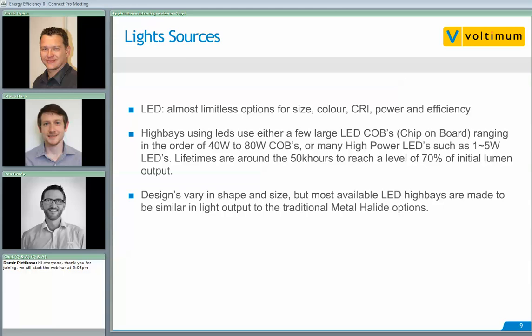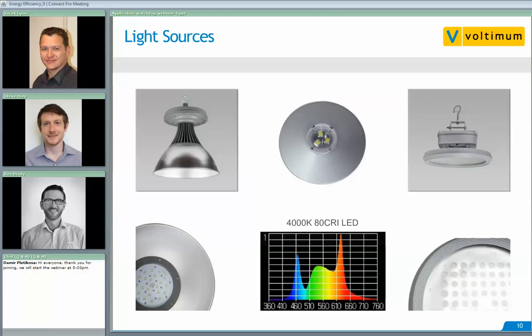LEDs don't tend to fail as other lamp sources do — they tend to just degrade in lumen output, so catastrophic failure is relatively unlikely. Most available LED high bays are made to be similar in light output to traditional metal halide options. Some designs mimic the look of traditional metal halide high bays, while others concentrate on the requirements of the luminaire — the form factor and a large enough heat sink to efficiently cool the LEDs. A typical 4000K LED offers more even color rendering than metal halide, allowing better color representation in manufacturing or warehousing applications.